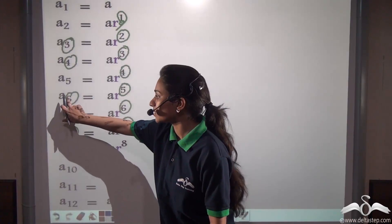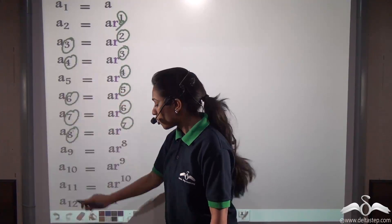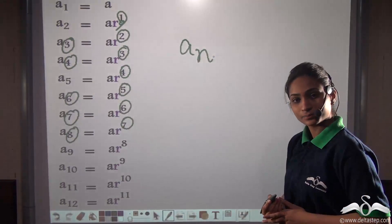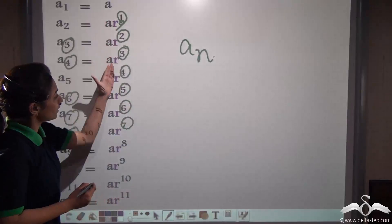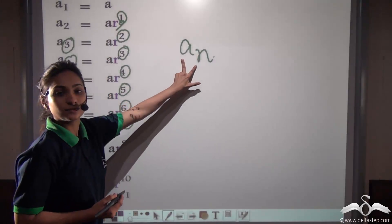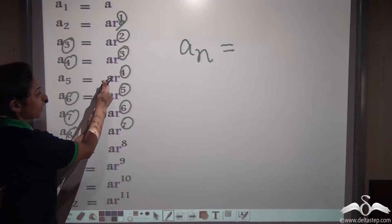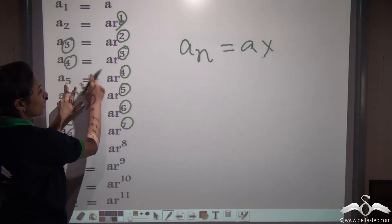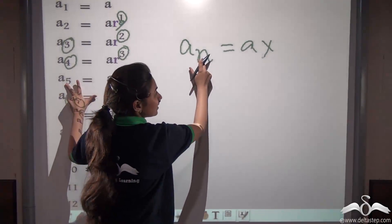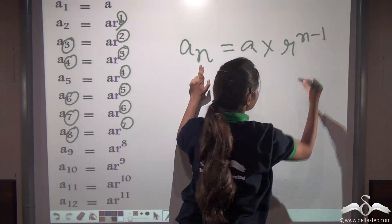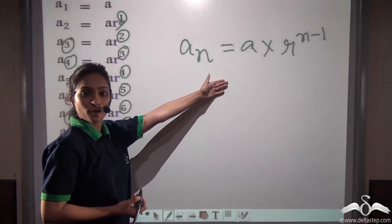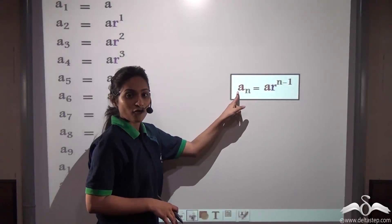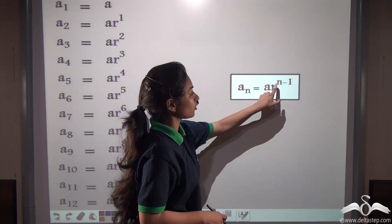This pattern continues — A12, A13, A14 — all the way to N terms. So what will the nth term be? Following the trend: the fifth term is A·R to the power 4, which is one less than 5. So the nth term is A·R to the power N minus 1. We have now derived the formula: the nth term of any GP series is A·R^(N-1), where A is the first element and R is the common ratio.